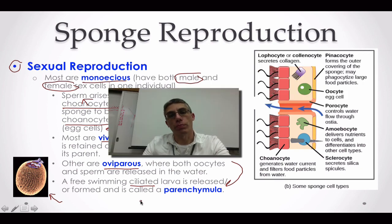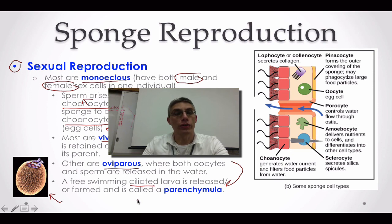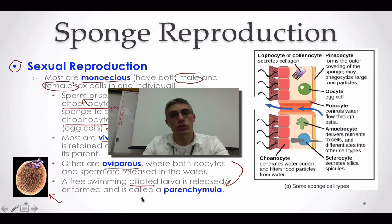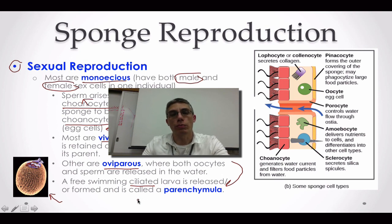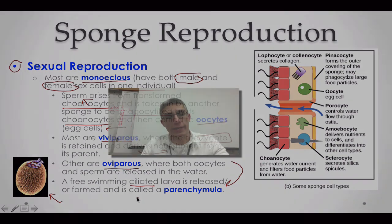That's going to finish up our second screencast for Chapter 12 — in fact, our last screencast for Chapter 12. One thing not mentioned in this screencast was the different classes of sponges mentioned in your textbook; you will look at these in lab. It is important that you are familiar with these before we take the summative assessment on Chapter 12. Please make sure that you have completed the study guide that goes along with this screencast before coming to class.